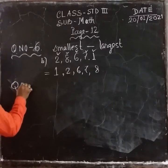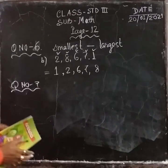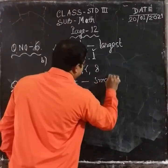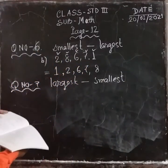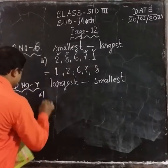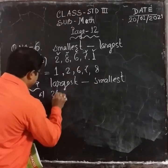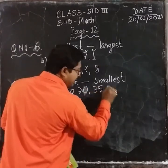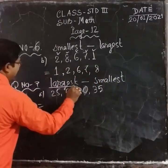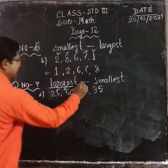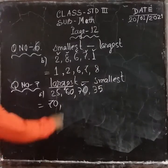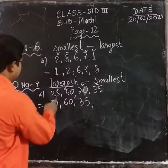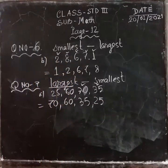Question number 7 is opposite — from largest to smallest. See the question: the numbers are 25, 60, 75, 70, and 35. You have to write from largest to smallest. The largest is 70, next 60, next 35, and last 25. In this way we have to solve. I hope you all understand.